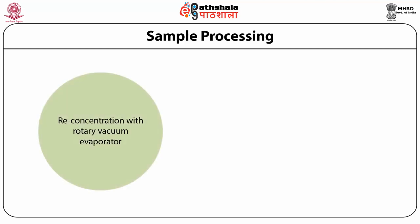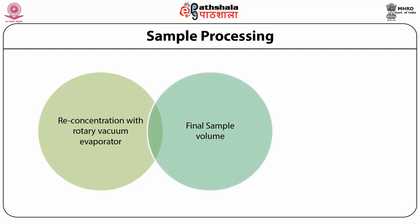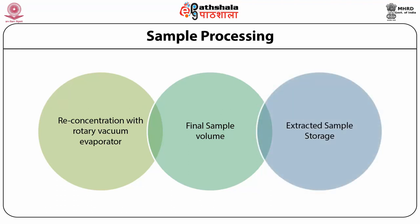Re-concentration is carried out again using a rotary vacuum evaporator. The cleaned extract is further concentrated and evaporated to near dryness with nitrogen gas. The final sample is prepared by re-dissolving the dried sample in 1 ml of toluene and transferred to 4 or 5 ml amber vials for final analysis. The sample vials are capped, marked with necessary identification, and kept in a refrigerator at 4 degrees centigrade prior to analysis.